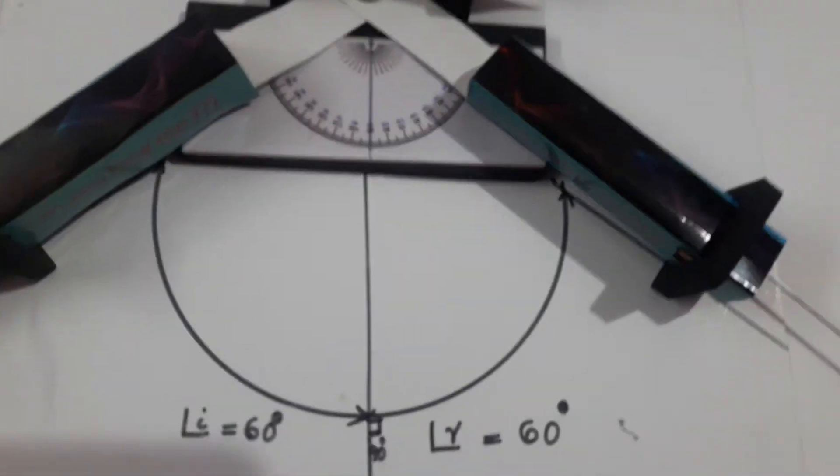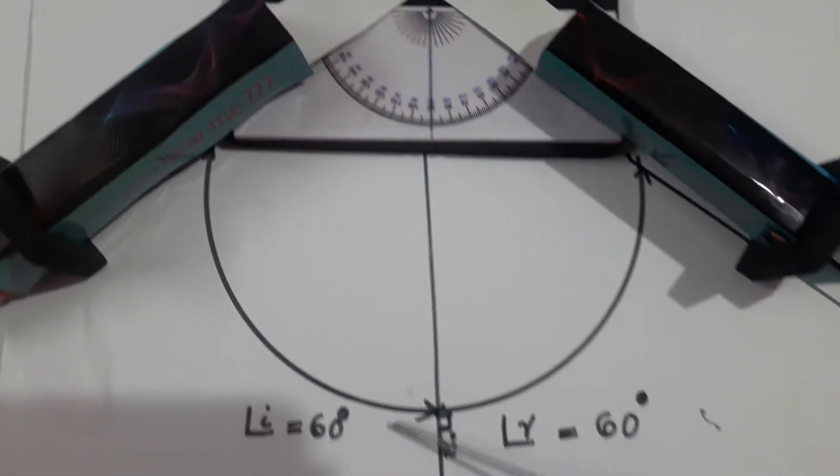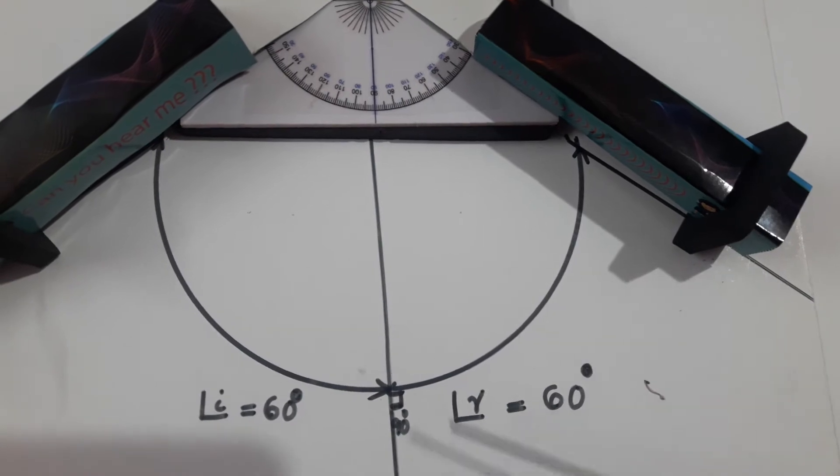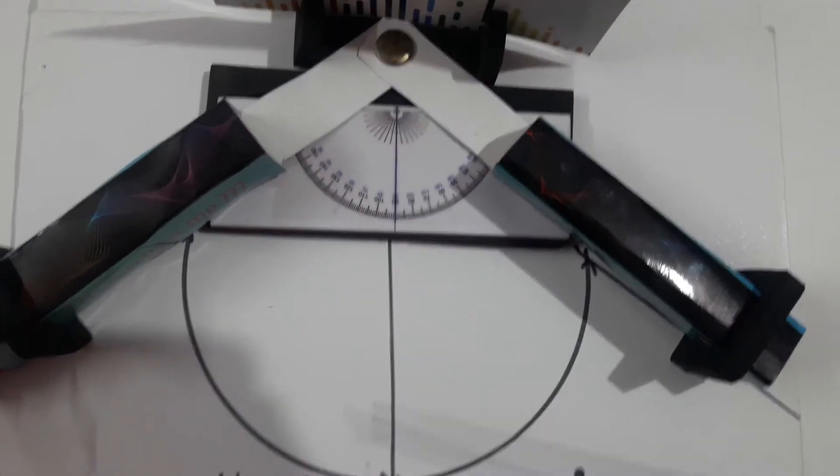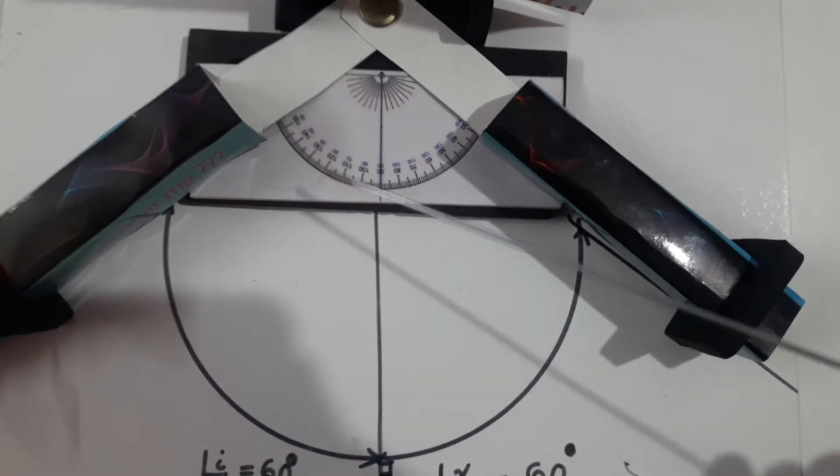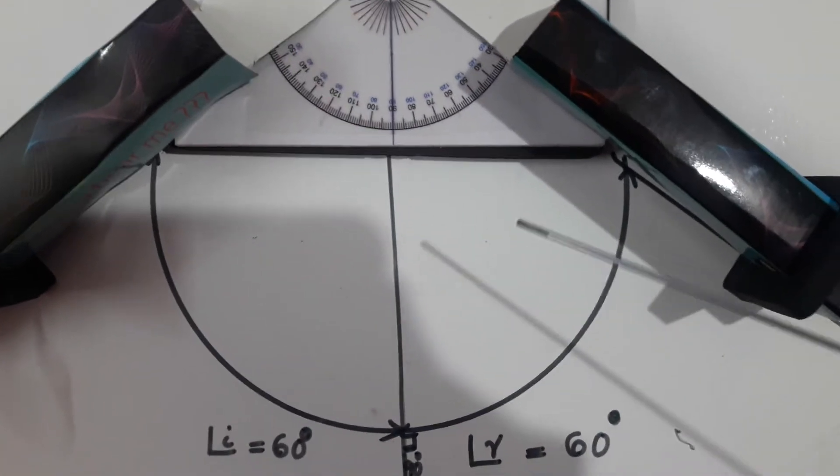Now measure the angle of incidence and the reflection and see the relationship between the angles. The angle of incidence is 60 degrees, then the angle of reflection is also 60 degrees.